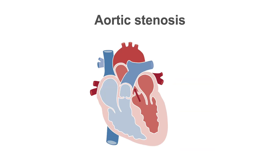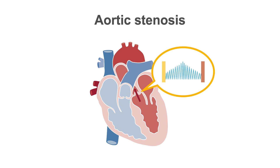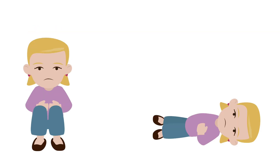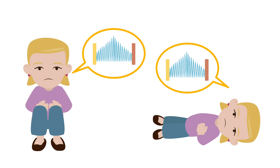If aortic stenosis was present before infective endocarditis develops, the stenotic valve would decrease the blood flow into the aorta. The murmur of aortic stenosis produces a mid-systolic harsh and rasping crescendo-decrescendo murmur best heard at the second right intercostal space with radiation into the carotid arteries. Squatting or lying flat will make this murmur louder.